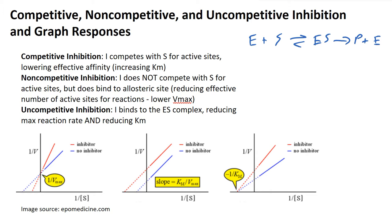In competitive inhibition, the inhibitor has affinity for the enzyme active site. I like to think of enzyme active sites as parking spots — there's a finite number of them. Competitive inhibitors grab the open parking spots before the actual substrate can, and if the substrate can't get into a parking spot, it can't get stabilized and can't react. This lower availability of parking spots for substrates means there is a lower effective affinity for the reactions to proceed.